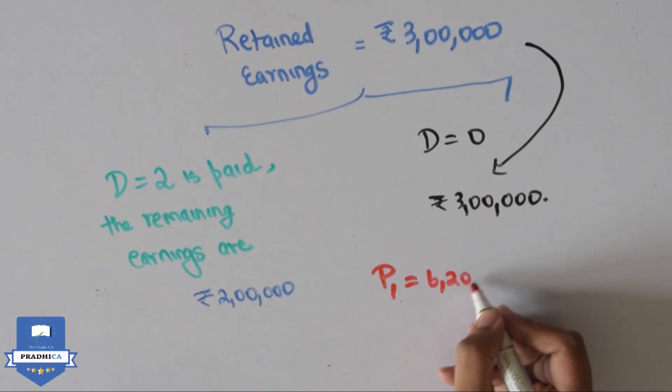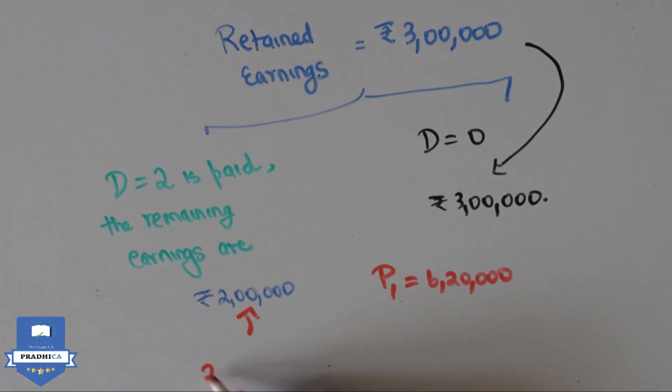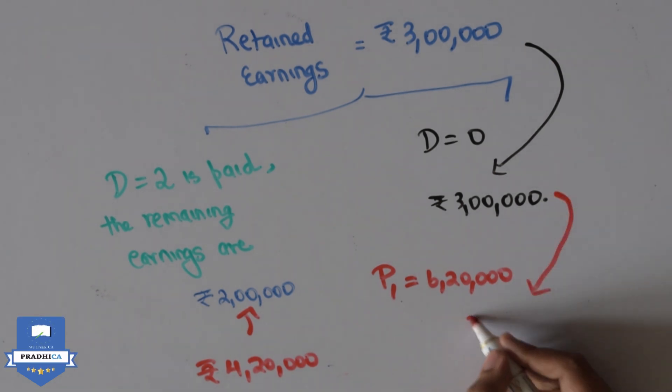Our project requires Rs 6,20,000 funding. In the first case, an additional Rs 4,20,000 will be required. And in the second case, just Rs 3,20,000 is required.